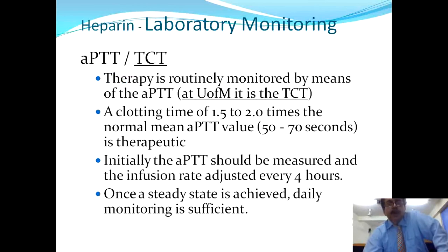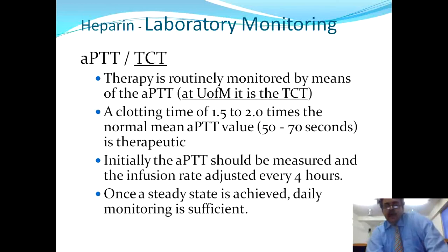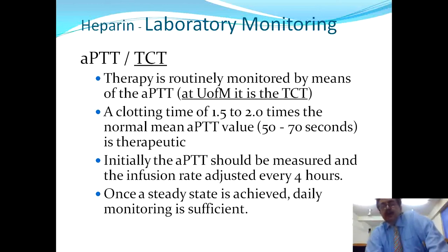For laboratory monitoring, heparin therapy is routinely monitored by APTT and thrombin clotting time (TCT). A clotting time of 1.2 to 2 times normal is required; the target APTT value is 50 to 70 seconds, which is the therapeutic range. The normal APTT value is about 33. Initially, APTT should be measured and the infusion rate adjusted every 4 hours.